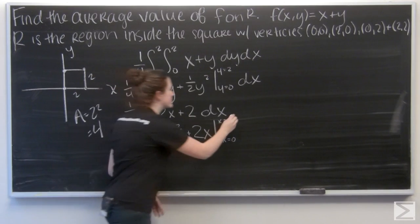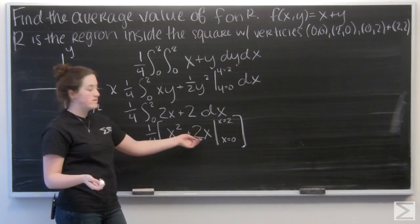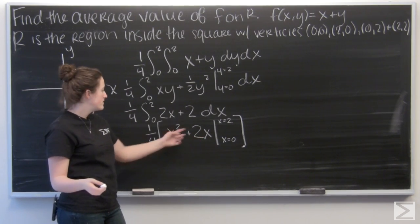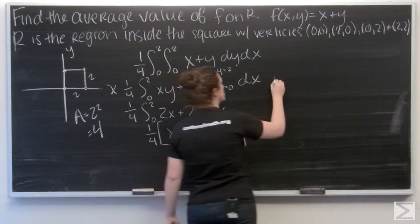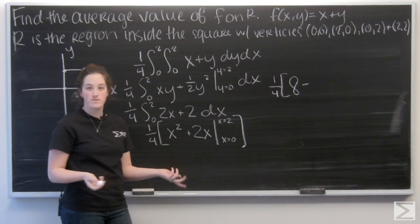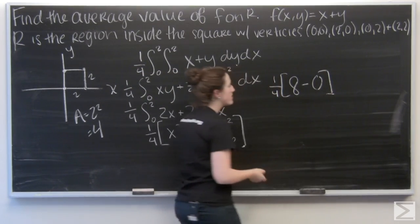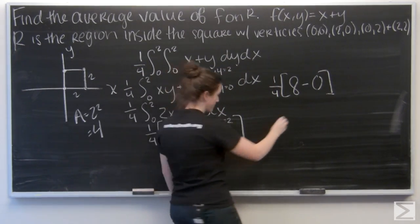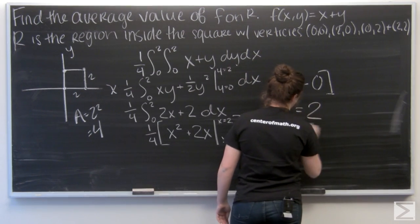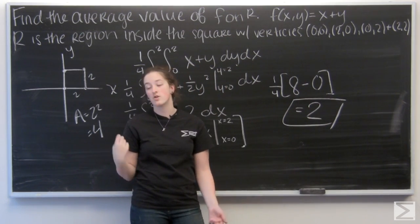So let me start by plugging 2 in. 2 squared is 4. 2 times 2 is 4. So I'm going to get 8. And then for x equals 0, I'm just going to get 0. So I'm looking at 1 fourth of 8, which is 2. So that's the average value of our function over this region.